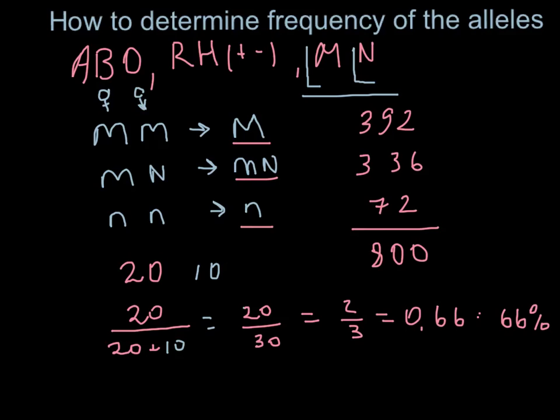66 percent. And vice versa, we can find the occurrence of the blue ribbons. We have to combine red plus blue.